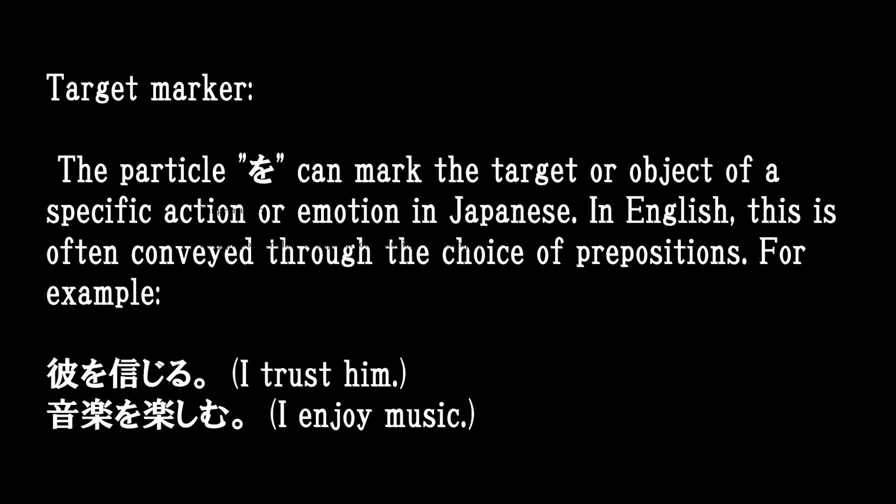Target Marker: The particle O can mark the target or object of a specific action or emotion in Japanese. In English, this is often conveyed through the choice of prepositions. For example: I trust him; I enjoy music. In Japanese: 彼を信じる, 音楽を楽しむ.